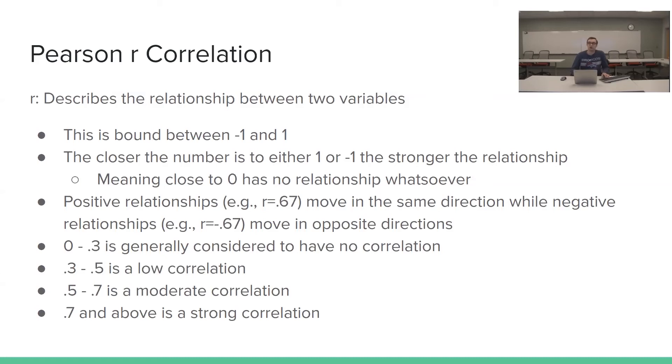Positive relationships move in the same direction. So if we're closer to one, then both our variables increase at the same time. So that's that height and weight kind of relationship. While negative relationships move in opposite directions. So as one increases, the other has a tendency to decrease. And then at the bottom here, we can see the breakdown of correlations of zero to 0.3 generally considered as no relationship. 0.3 to 0.5 is a low relationship. 0.5 and above is generally the point of having a moderate relationship between two variables. And above 0.7 is considered a very strong relationship.